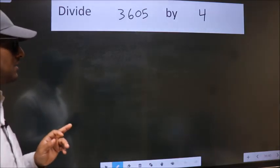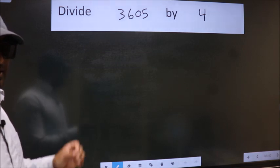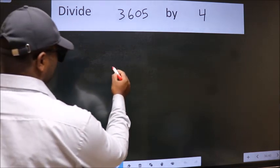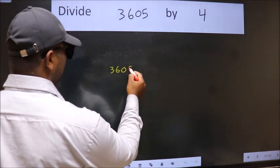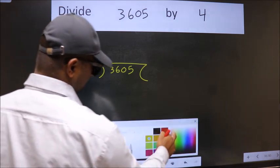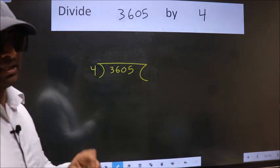Divide 3605 by 4. To do this division, we should frame it in this way. 3605 here, 4 here. This is your step 1. Next.